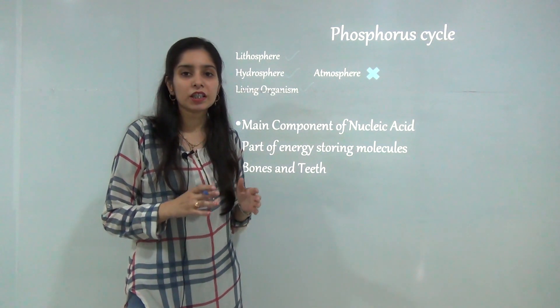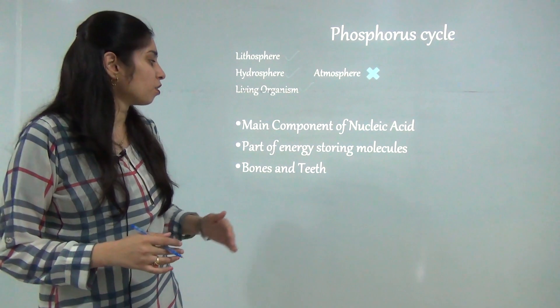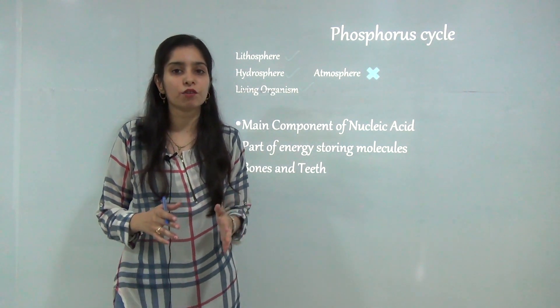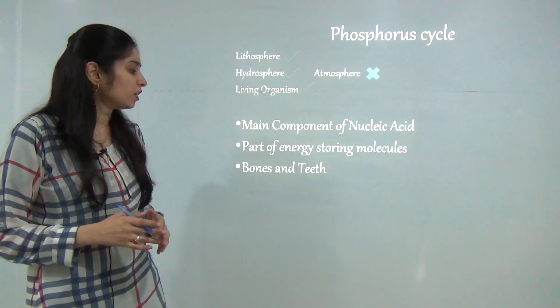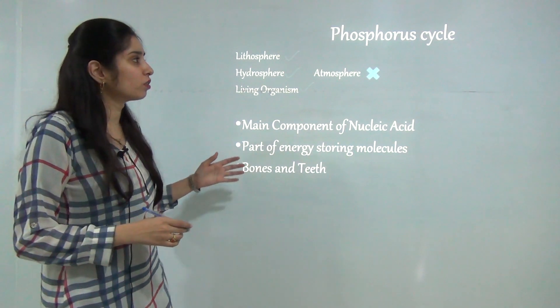The main components: it is mainly present in nucleic acid like DNA and RNA. It is the main part of energy storing molecules like adenosine diphosphate and adenosine triphosphate ATP, and main bones and teeth are formed by phosphorus.